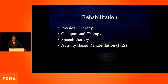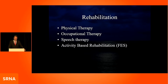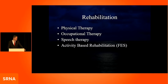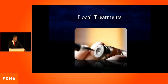From a rehabilitation standpoint, physical therapy, occupational therapy, and speech therapy are very important — spasticity can even affect the voice. At our centers in Baltimore, we've been using activity-based rehabilitation, combining traditional physical therapy and occupational therapy with functional electrical stimulation, which is a very powerful approach. It gets people to lower doses of spasticity medications, and some come off them entirely — this was published more than 15 years ago.